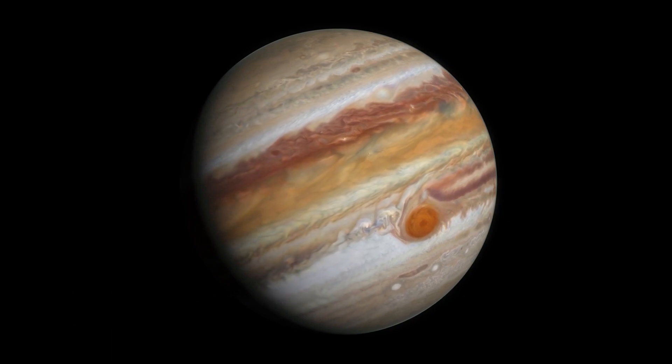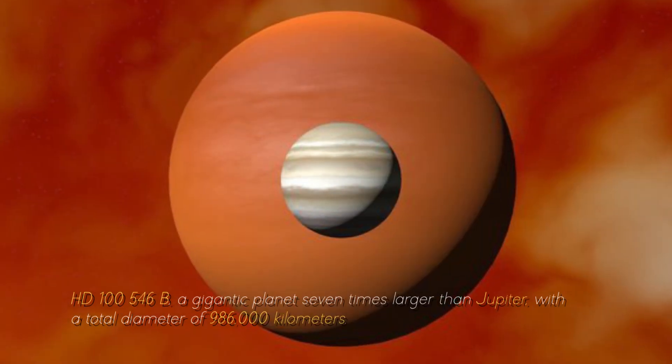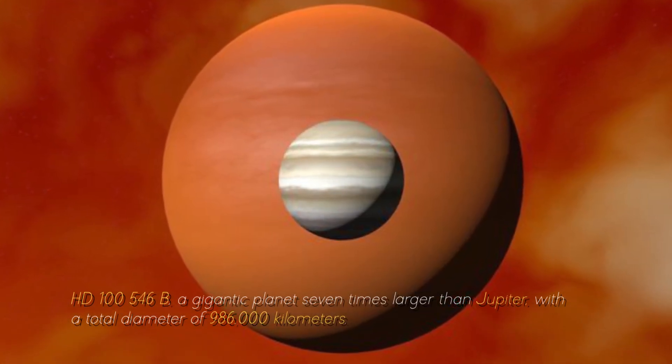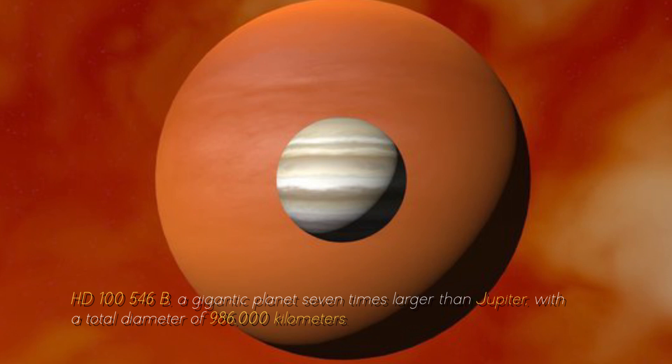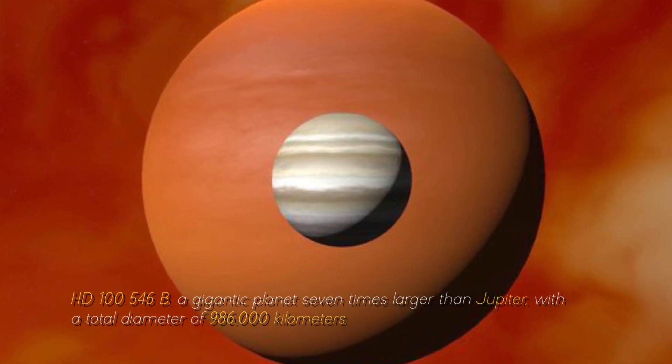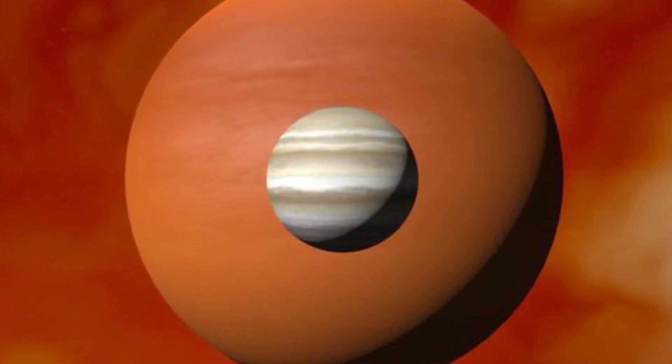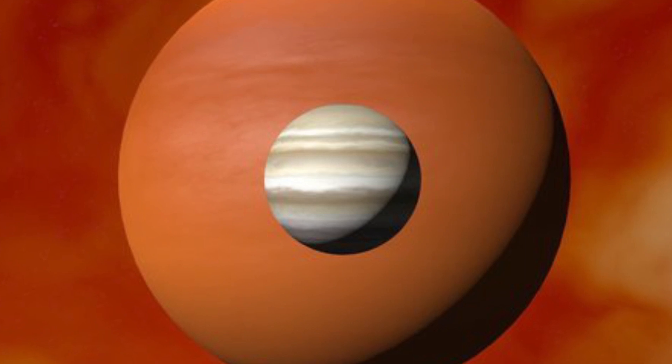Now, let's compare Jupiter with the largest planet in the known universe, HD-10546 b, a gigantic planet seven times larger than Jupiter, with a total diameter of 986,000 kilometers. You can imagine what Earth would look like near this cosmic monster, can't you?